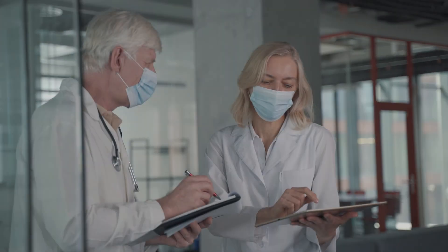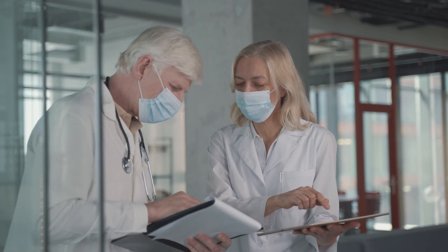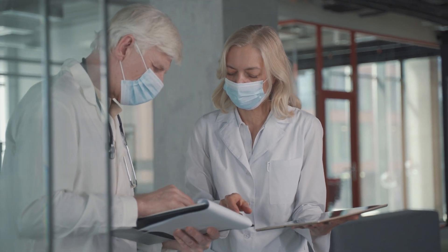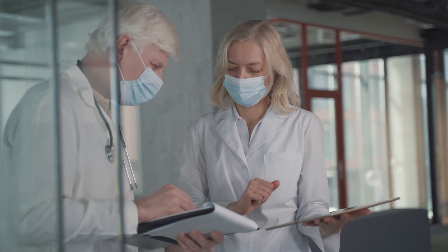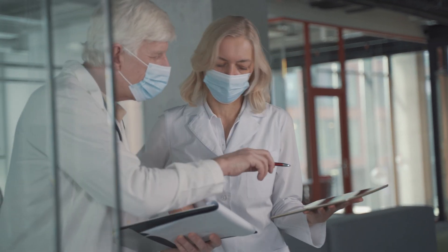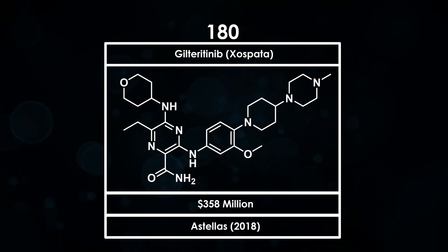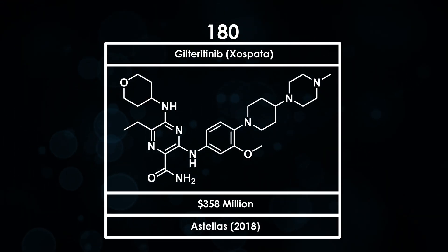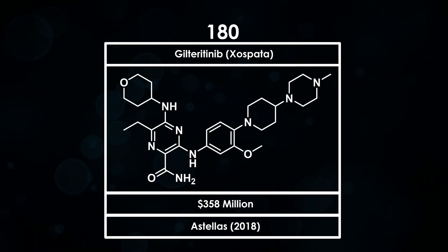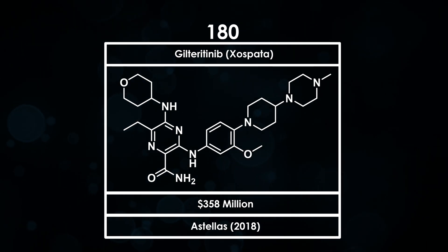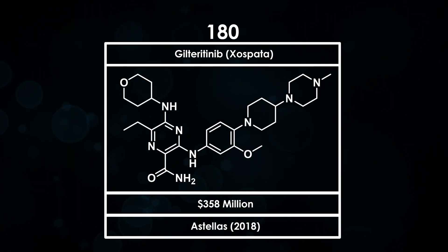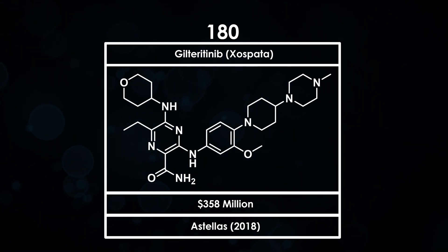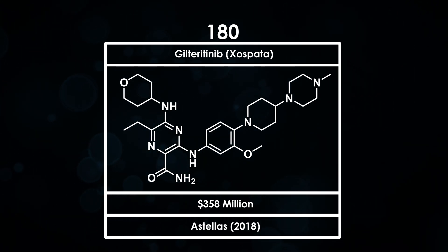Phase 3 clinical trials showed that gilteritinib increased the number of patients who experience a complete remission with full or partial recovery of blood cell levels. Due to this data, gilteritinib was granted fast-track and priority review by the FDA, as well as orphan drug designation, which protects it from competition on the market, incentivising research for rare diseases.